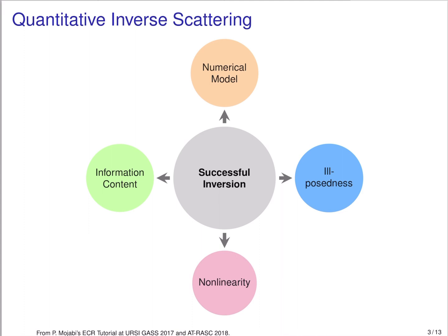The first factor, and perhaps the most fundamental one, is the information content of the measured data. We essentially need to make sure that we have sufficient information content within our measured data to be able to reconstruct the details of interest.